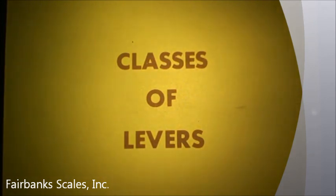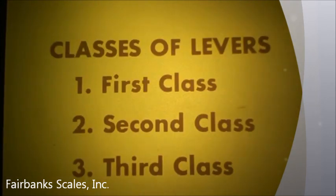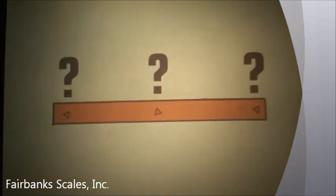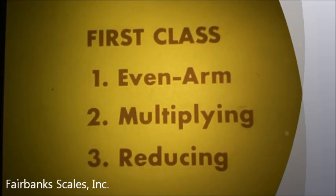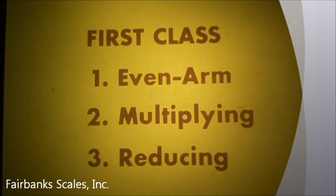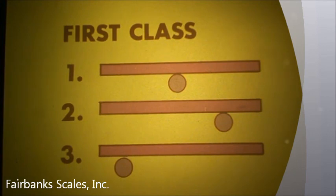Levers are divided into three types or classes: first class, second class, and third class. The class of a lever is determined by the placement of its power point, fulcrum point, and load point. In a first class lever, the fulcrum point is between the power point and the load point. A first class lever can be an even arm lever, a multiplying lever, or a reducing lever, depending upon where along the beam the fulcrum point appears and the resulting relationship between the power arm and the load arm.